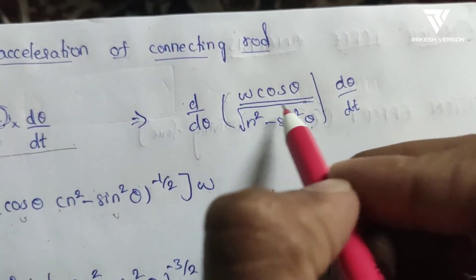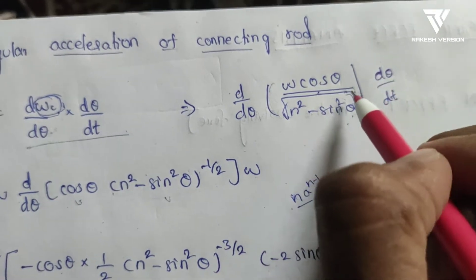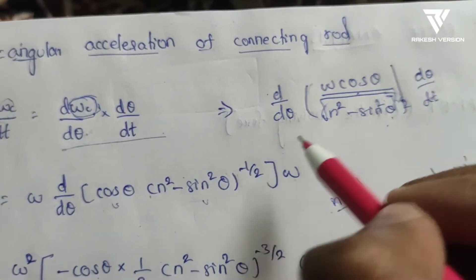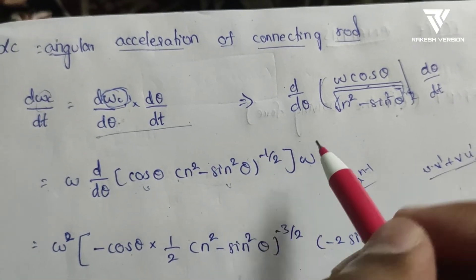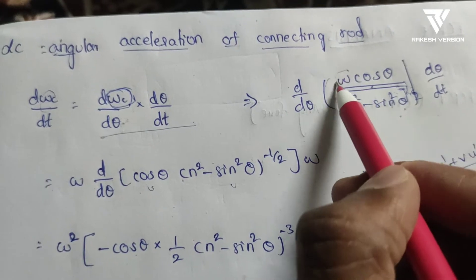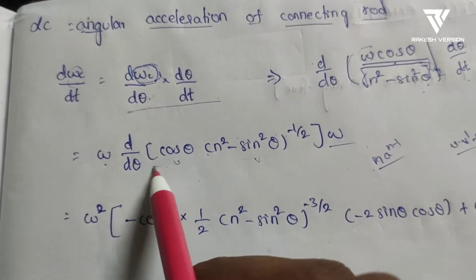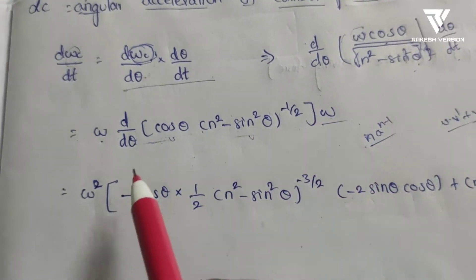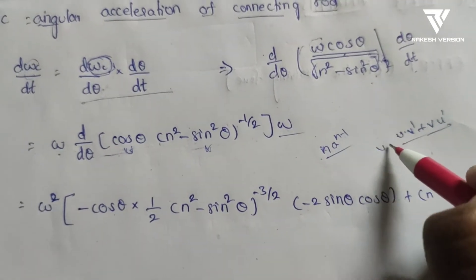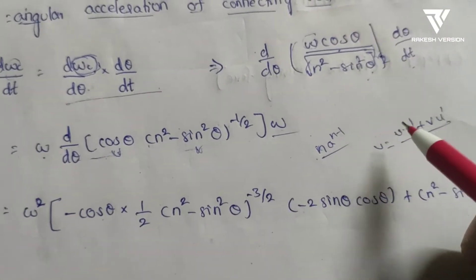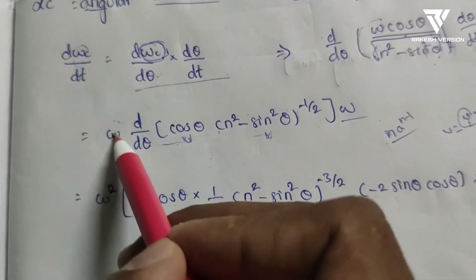When the root is moved to the numerator it becomes a power of −1/2. Differentiating, ω is taken as constant outside. The term dθ/dt becomes ω, giving a factor of ω². We apply the uv differentiation formula: d(uv)/dθ = u·v' + v·u'.